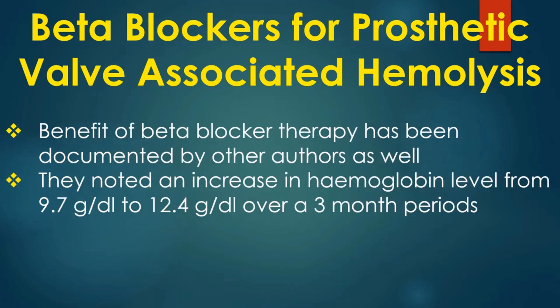The benefit of beta blocker therapy has been documented by other authors as well. They noted an increase in hemoglobin level from 9.7 to 12.4 g per deciliter over a 3-month period. We also have personal experience of significant decrease in hemolysis with beta blocker therapy over a period.